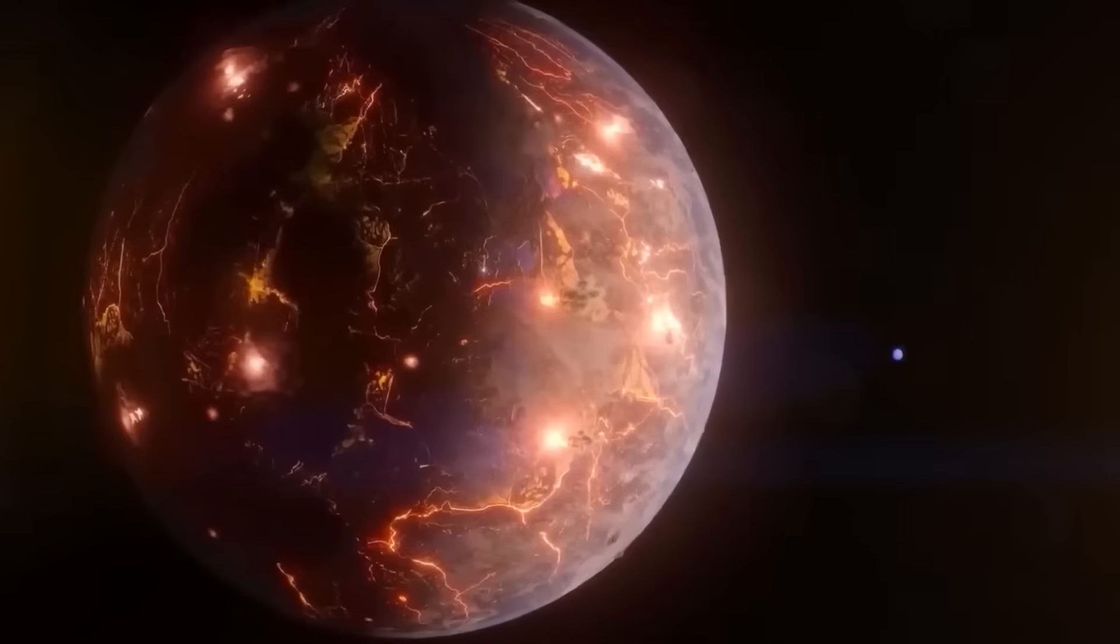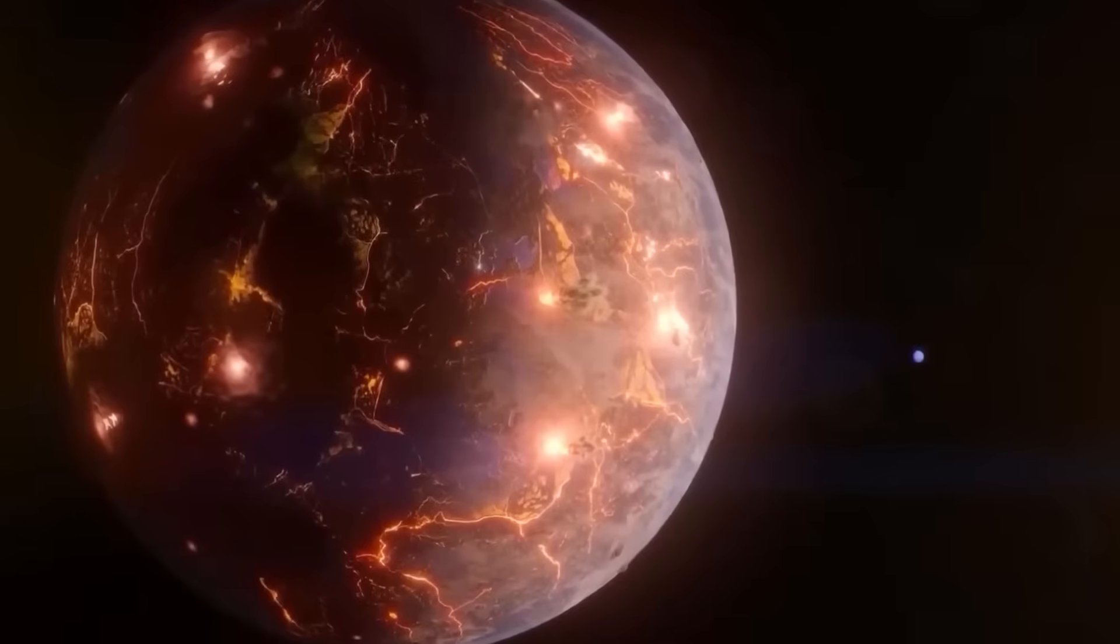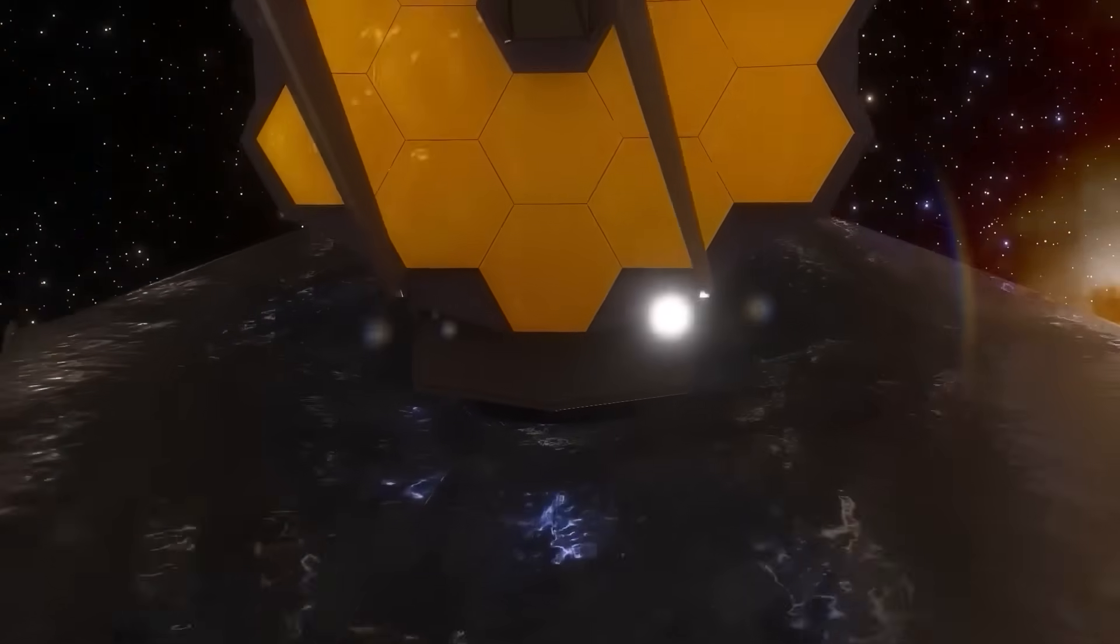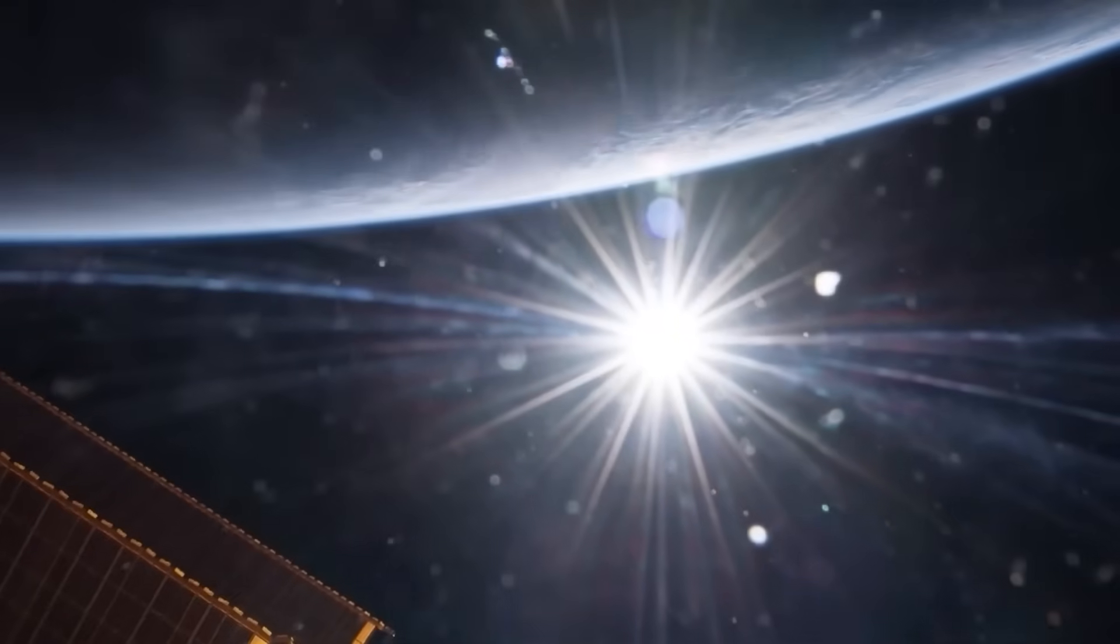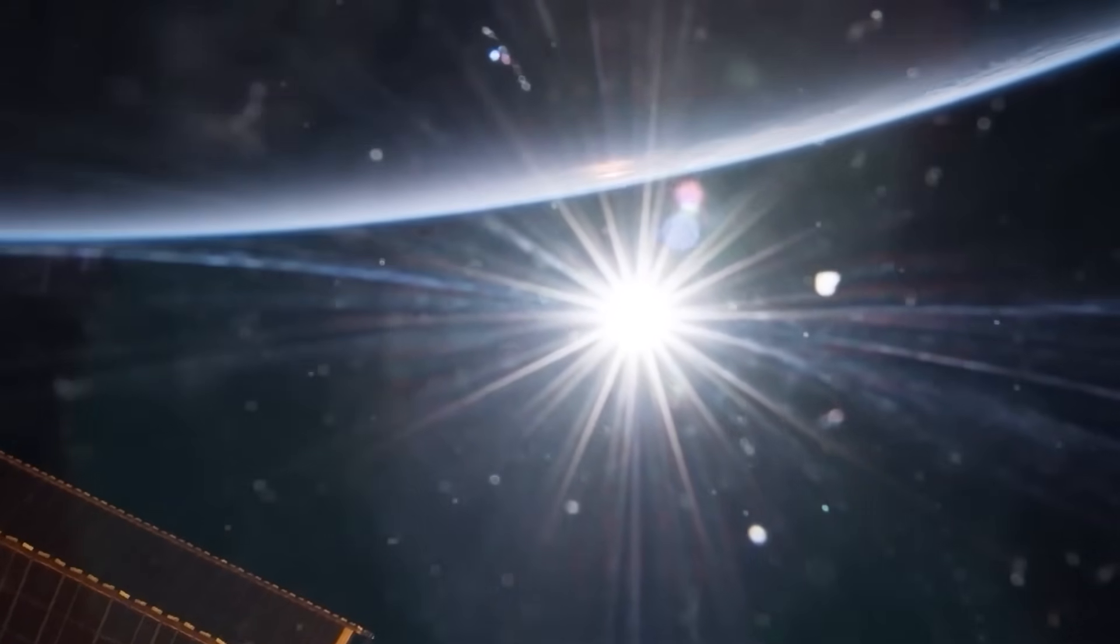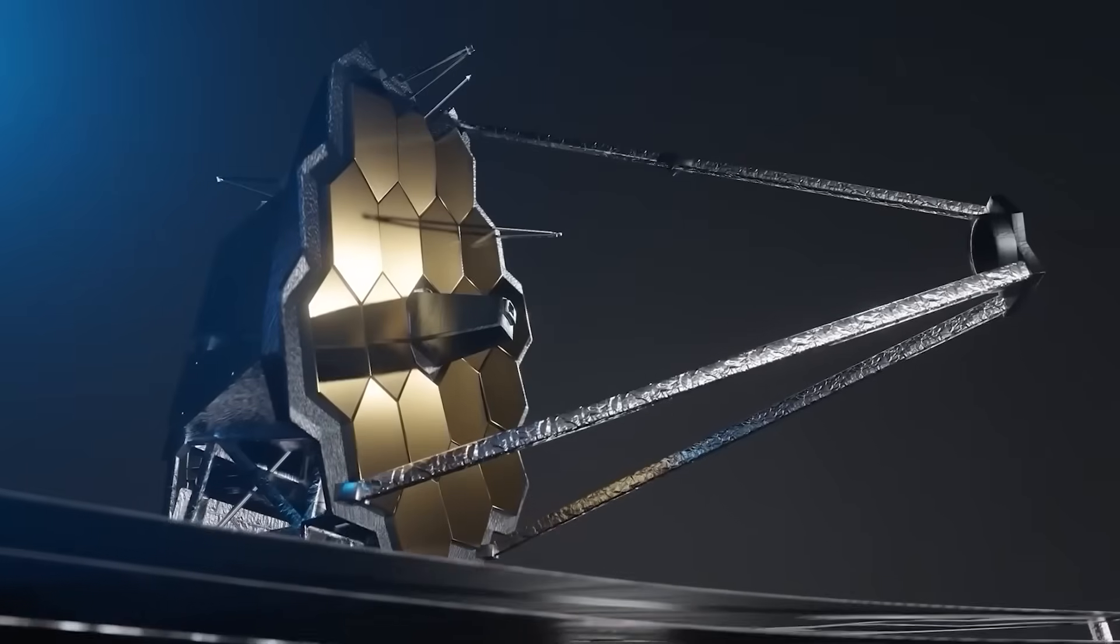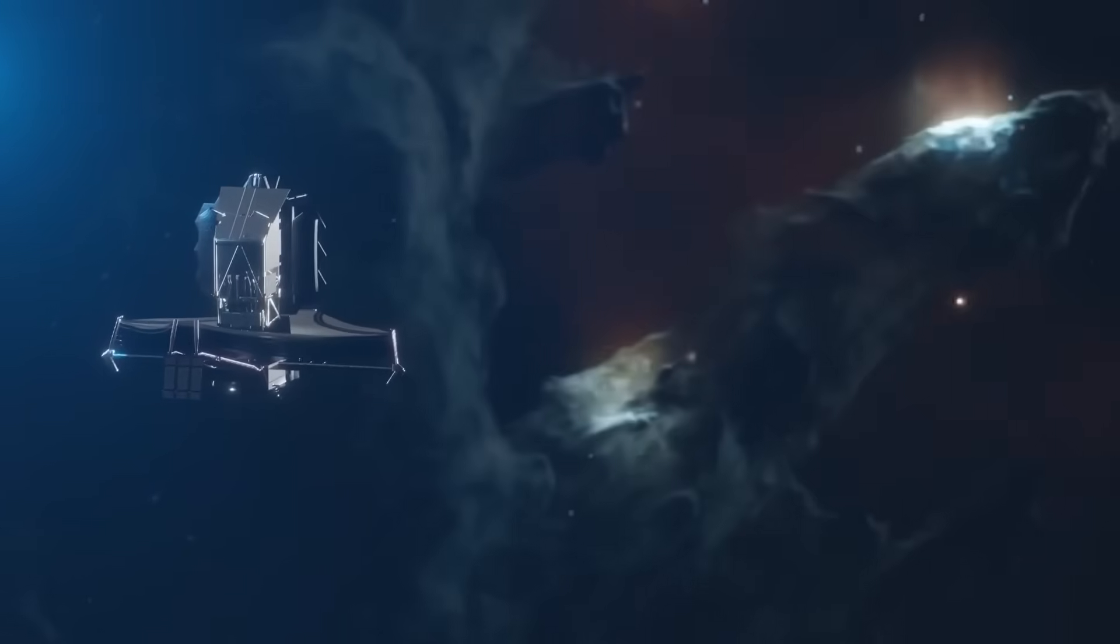Infrared light became Webb's superpower here. Young planets like TWA-7b are still cooling down, so they glow in mid-infrared wavelengths. Earthbound telescopes see the star's light and dust. But in infrared, the planet stands out as its own warm spot. That's why JWST, with its cooled mirrors and infrared design, could pick it up where older telescopes could not.